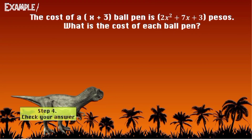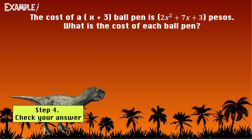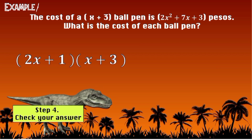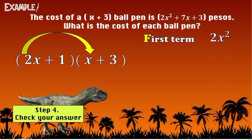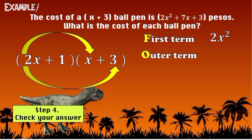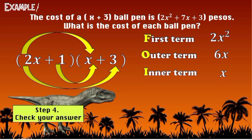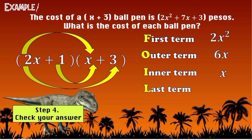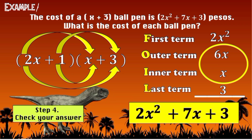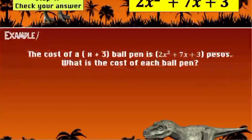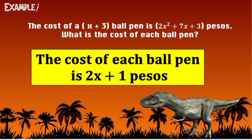For step four, we check the answer using the FOIL method: (2X + 1)(X + 3). First term: 2X × X = 2X². Outer term: 2X × 3 = 6X. Inner term: 1 × X = X. Last term: 1 × 3 = 3. Simplifying, combine 6X and X: our final answer is 2X² + 7X + 3. The cost of each ball pen is 2X + 1 pesos.